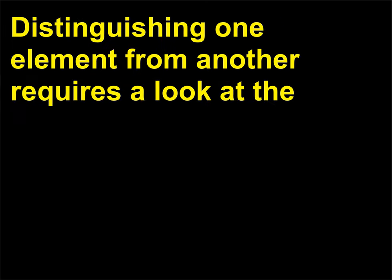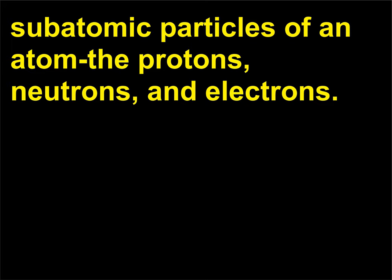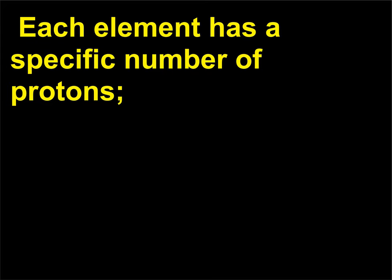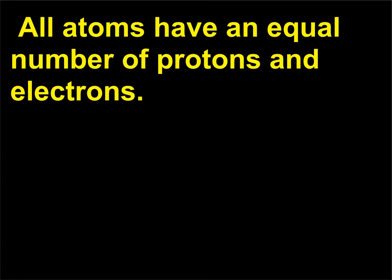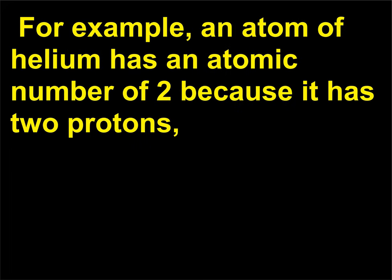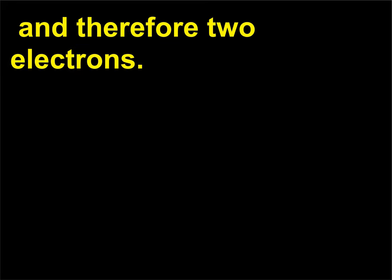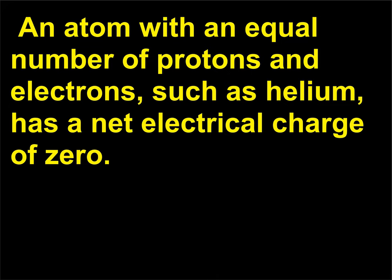How do elements differ from one another? Distinguishing one element from another requires a look at the subatomic particles of an atom: the protons, neutrons, and electrons. Each element has a specific number of protons. This number is used to ascribe an atomic number to an element. All atoms have an equal number of protons and electrons. For example, an atom of helium has an atomic number of two because it has two protons and therefore two electrons. An atom with an equal number of protons and electrons, such as helium, has a net electrical charge of zero.